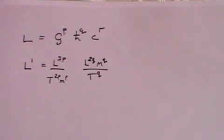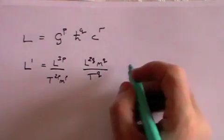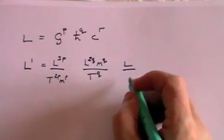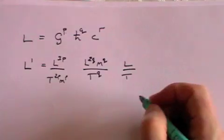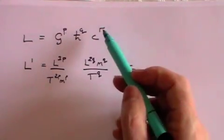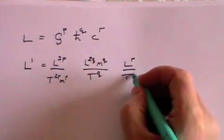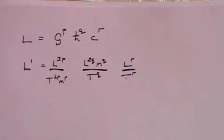And finally, c was in units of l over t, length over time, but that's got to be raised to the power r. So now we have a length term. This is what's called dimensional analysis.